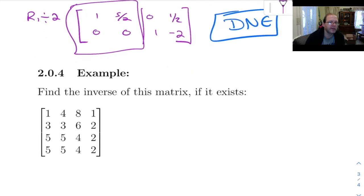This matrix down here, find the inverse of this thing if it exists. Okay, so the first thing I would do here is tack on a 4 by 4 identity.